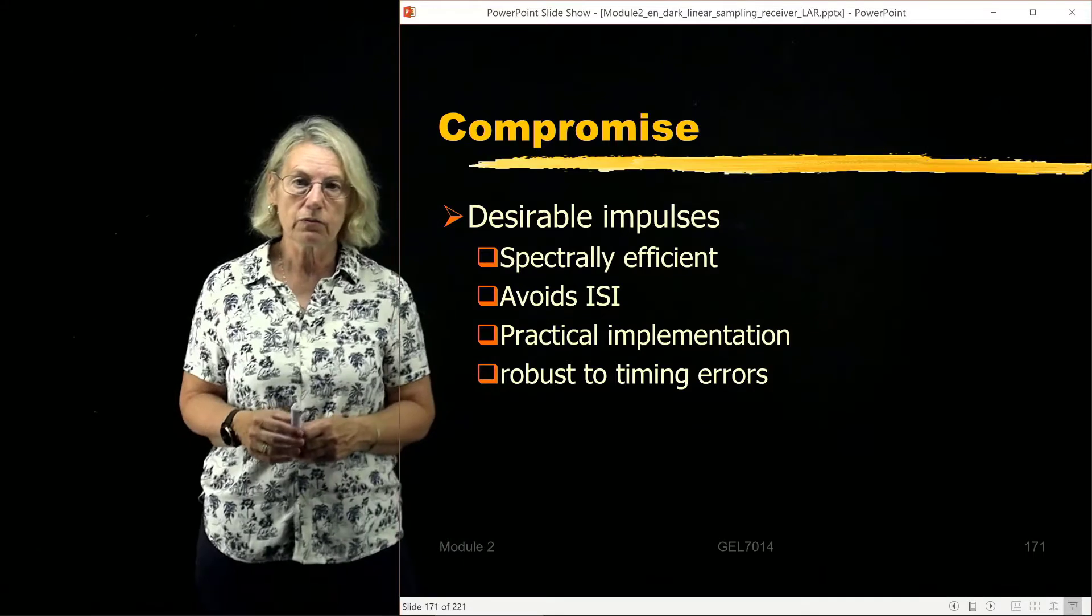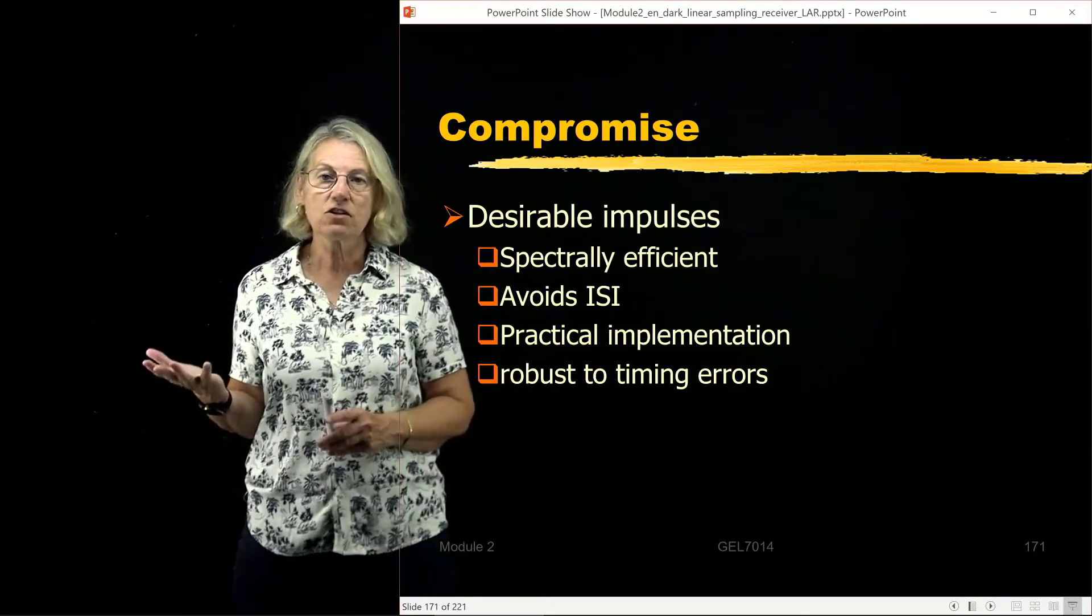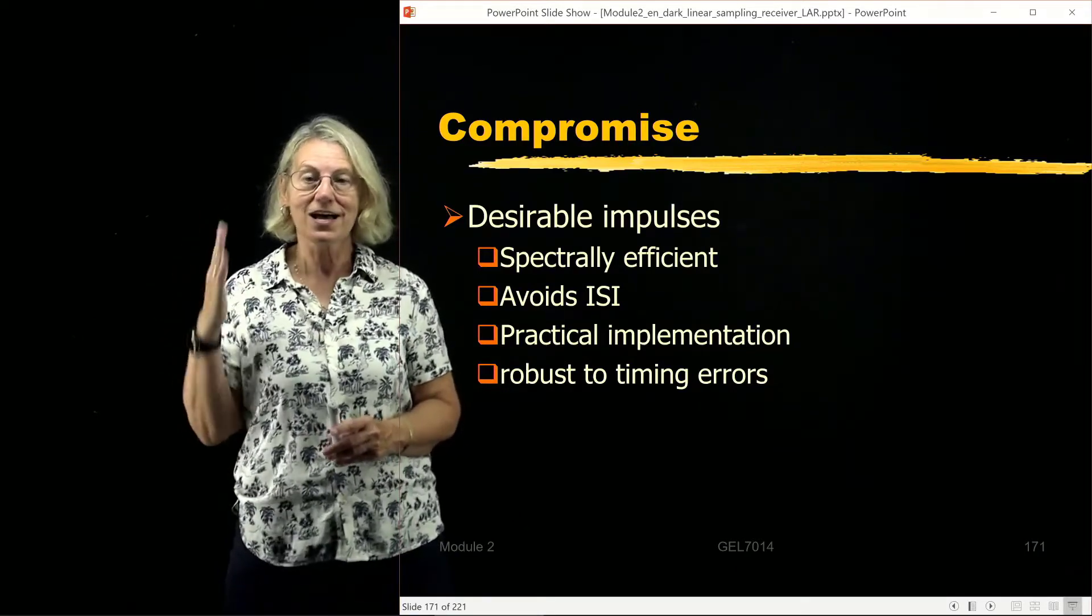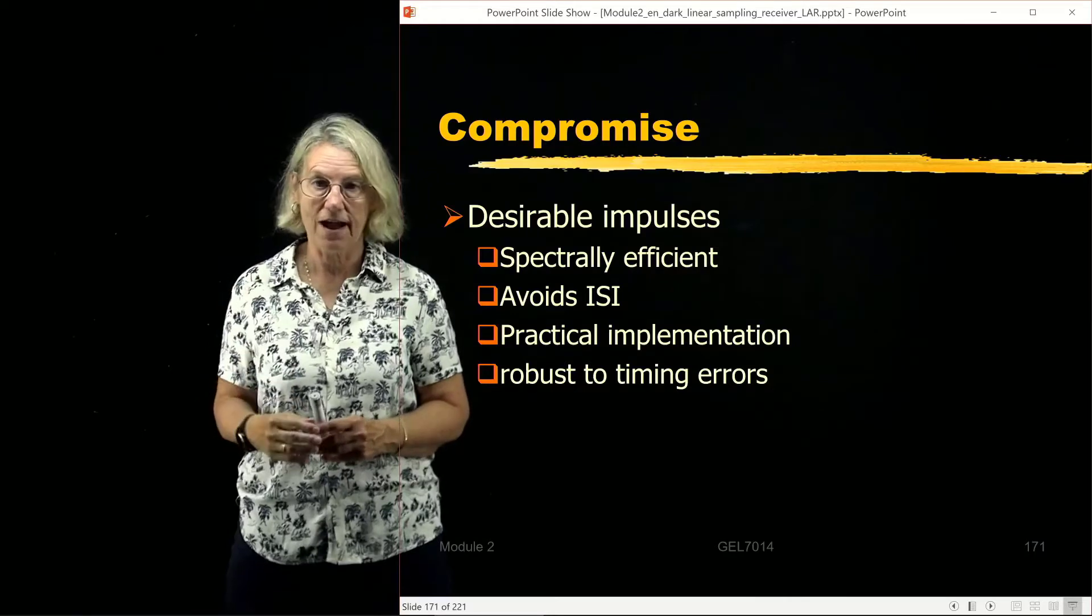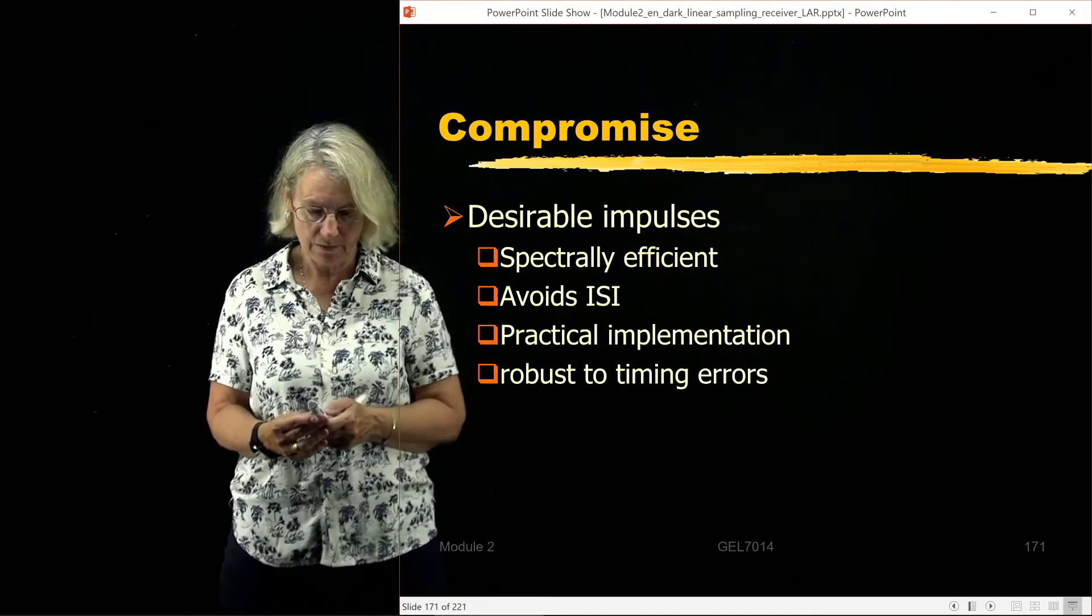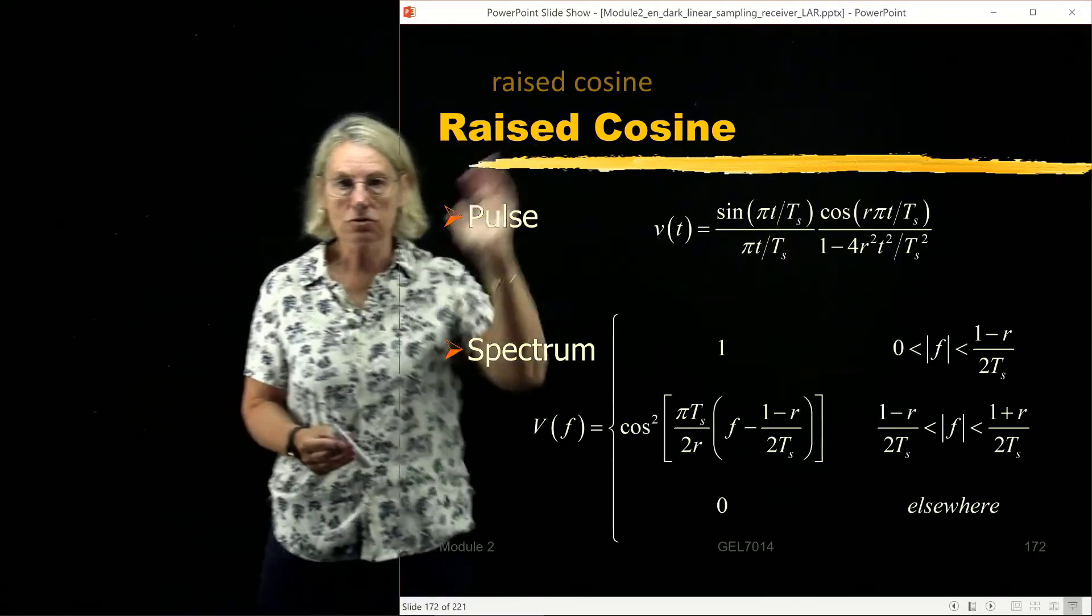But very important, we'd like it to be robust to timing errors. Our clock signal is subject to jitter and our samples may not be happening at the exact time that we think theoretically that they're happening, and we would like a pulse that could be robust to these imperfections. And that brings us to the raised cosine pulse.